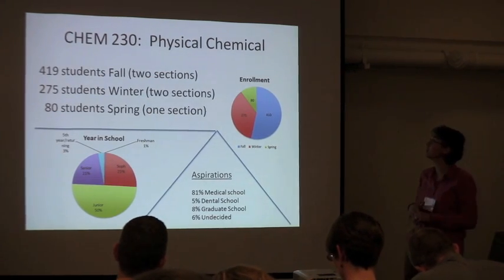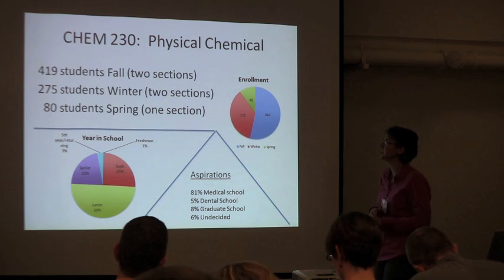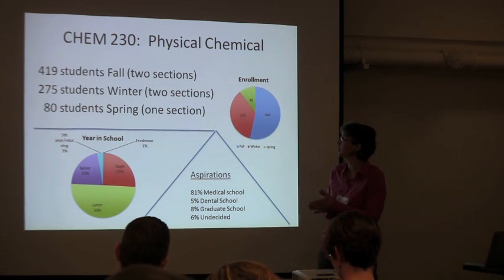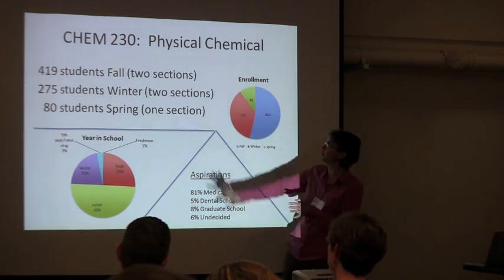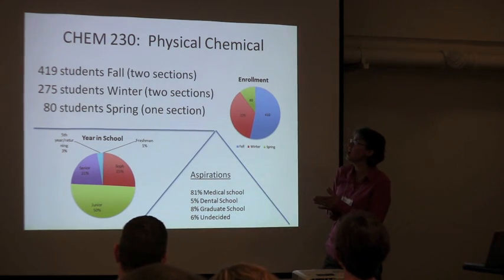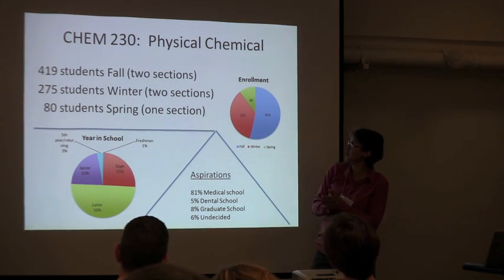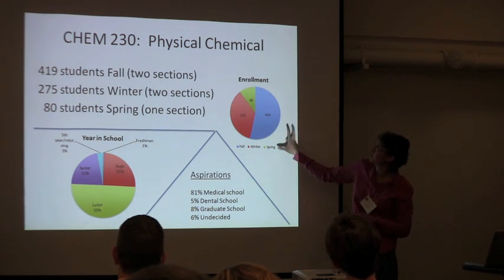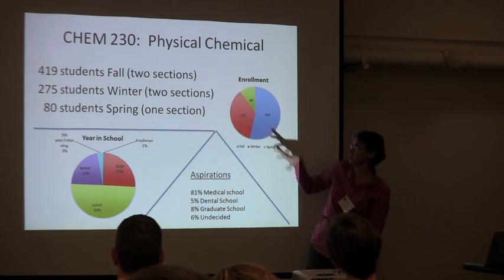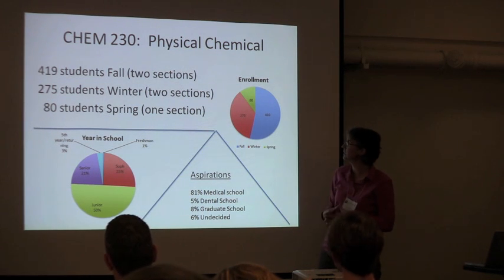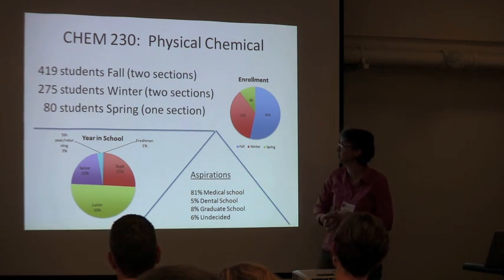I'll tell you about the students in the course. The enrollment varies across the terms. In the fall, chemistry usually has the largest enrollment. We start with about 419 or 420 students in the fall, then a small proportion in the winter, and in the spring term I have 88 students. So it's offered three times a year and gets smaller each term — a large lecture course in particular.